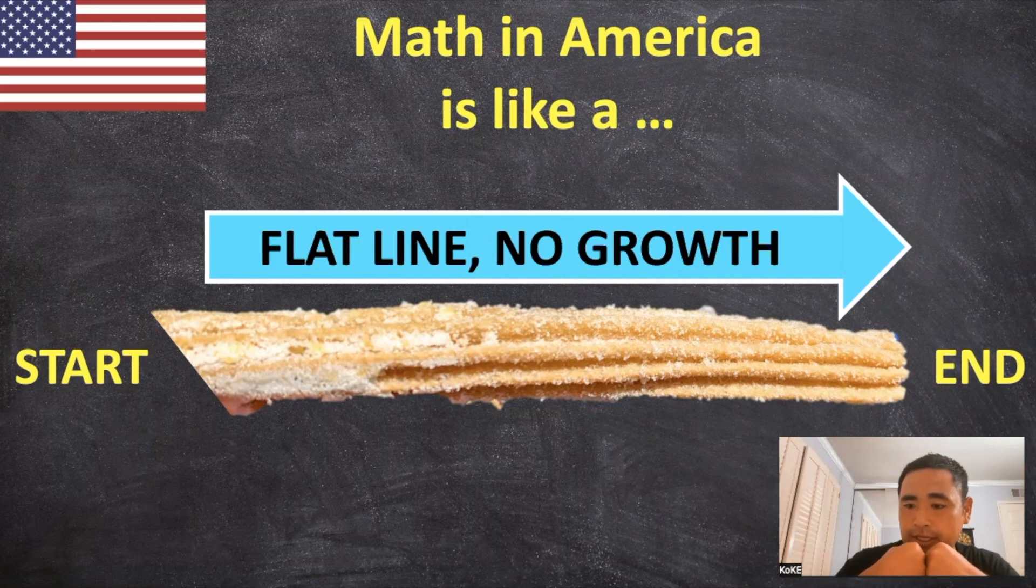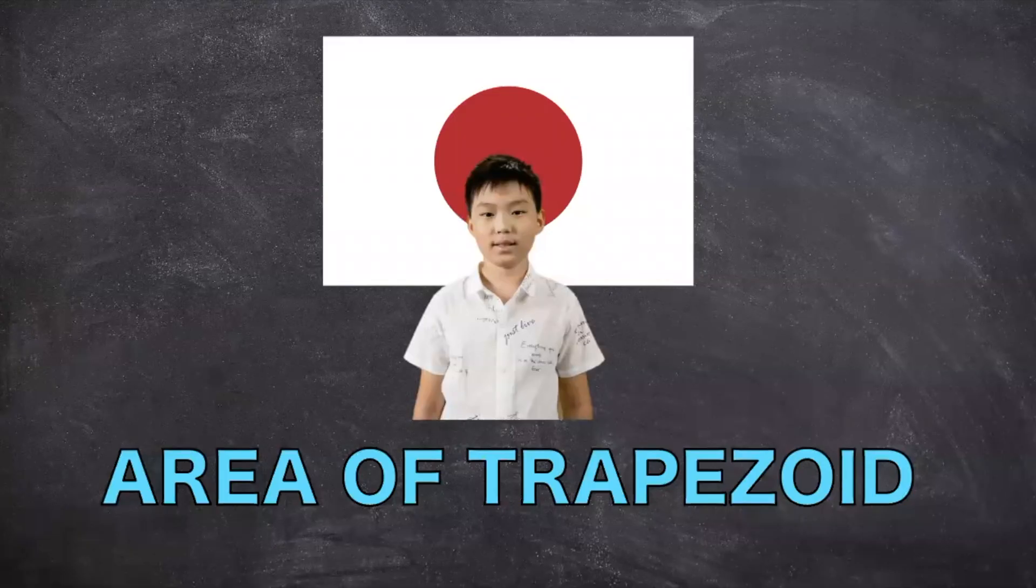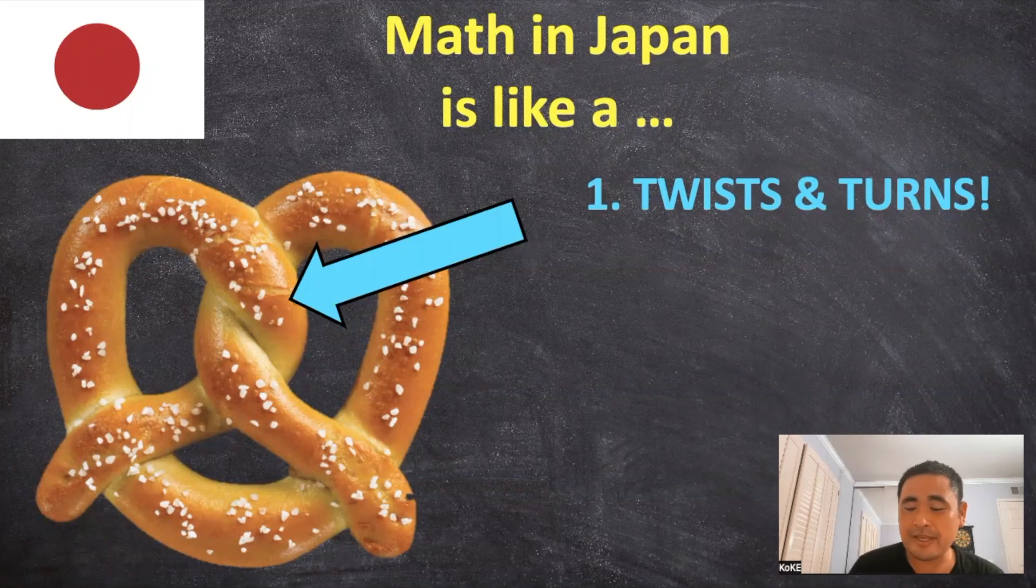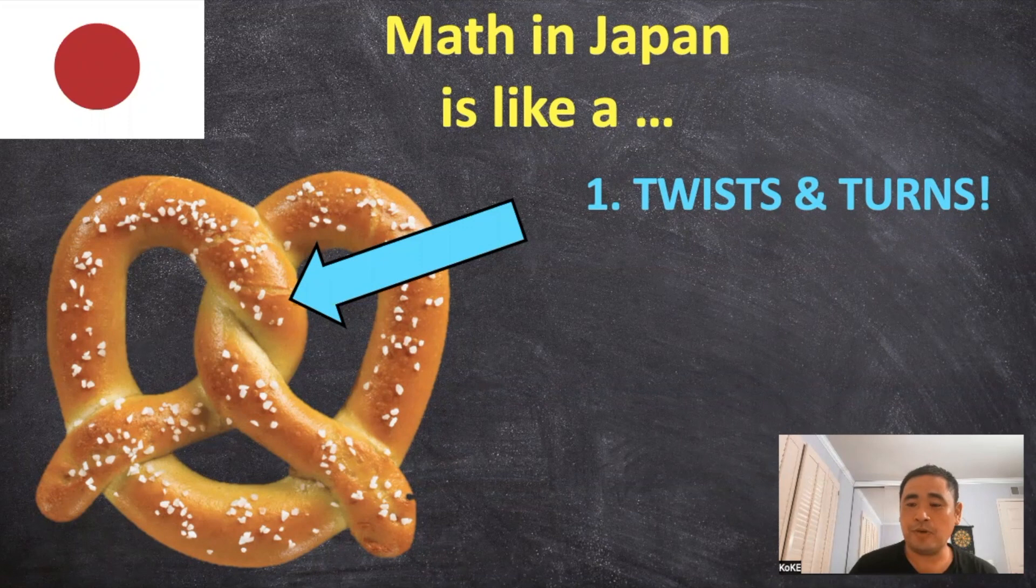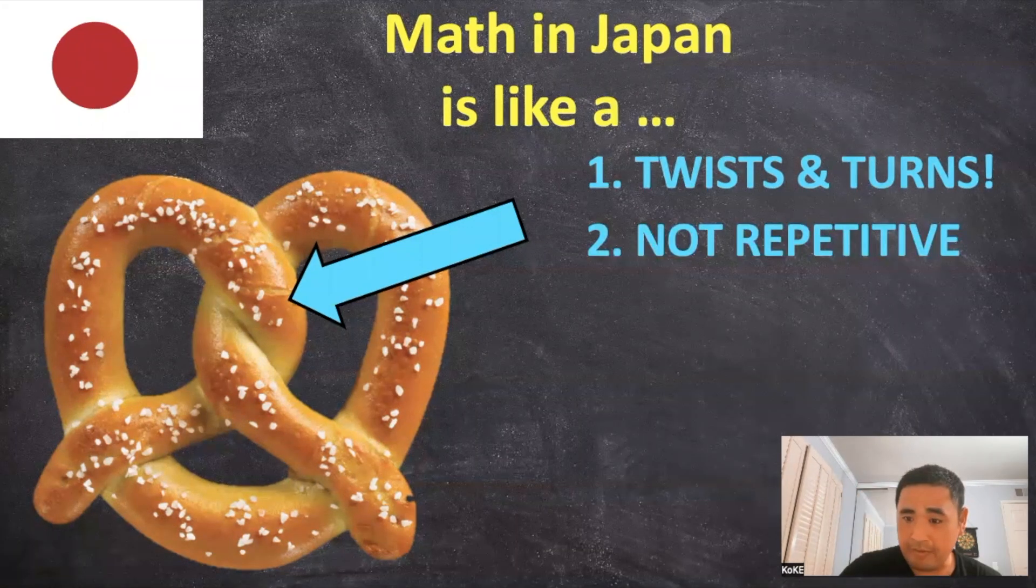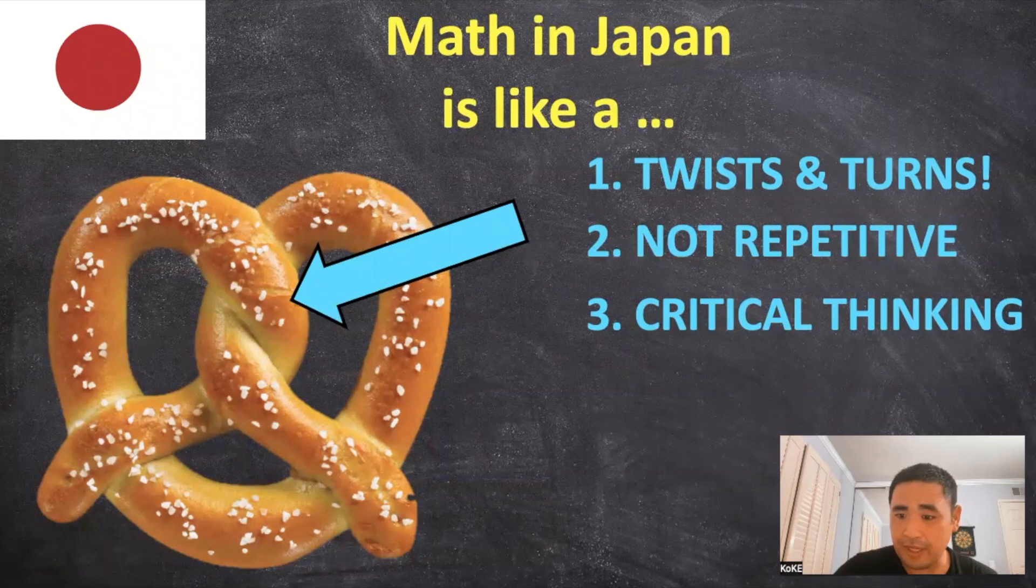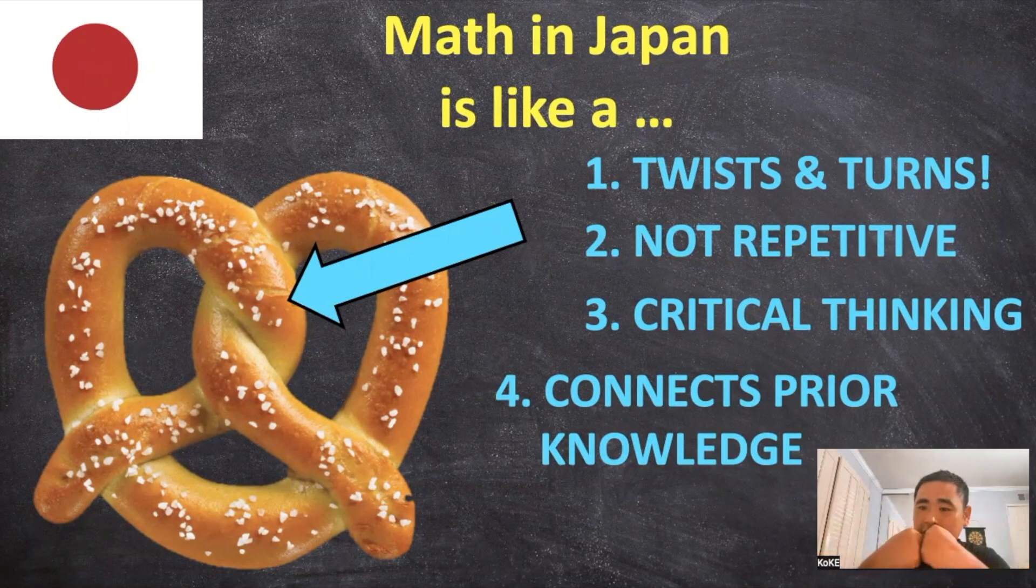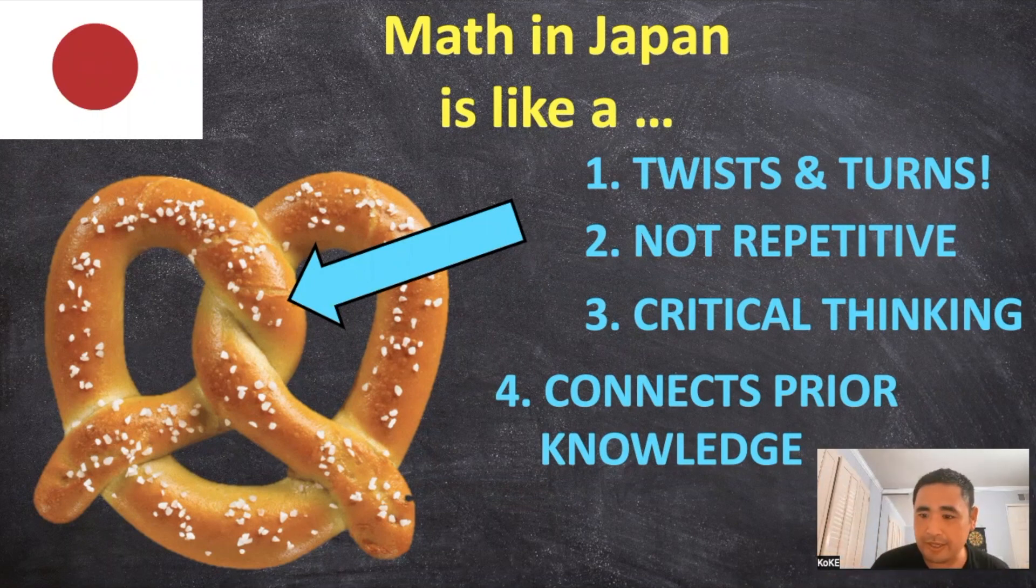Now let's see how Japan does it. So contrary to America, Japanese math is like a pretzel in that it's full of twists and turns. It's not repetitive, there's lots of critical thinking, and it really connects and links prior knowledge and mathematical concepts together. Now let's take a look.